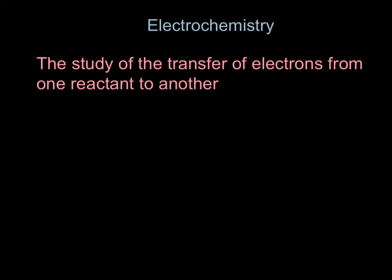This is the basis for an area of chemistry called electrochemistry — the study of the transfer of electrons from one reactant to another. These single replacement reactions happen because of the movement of electrons; electrons go from one substance to another, causing this single replacement, this little switcheroo. Next class we'll talk more about that. Take notes. Adios.